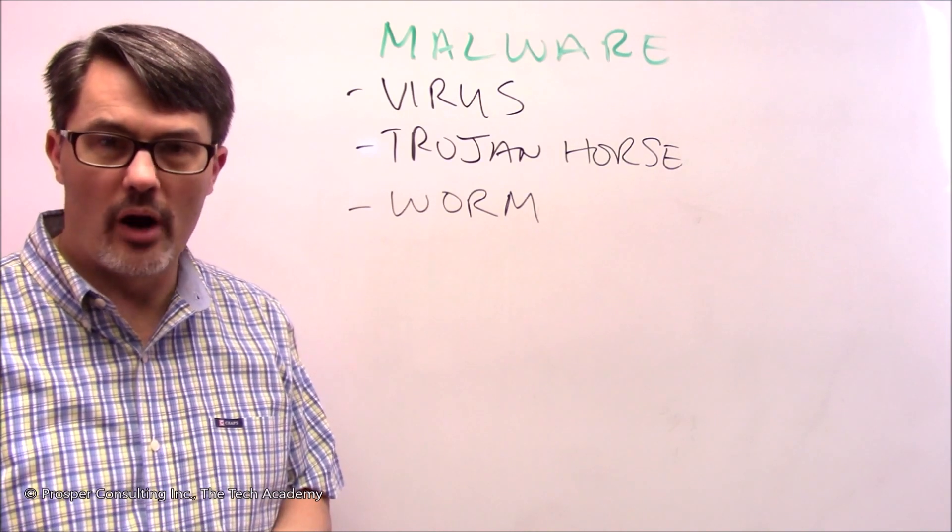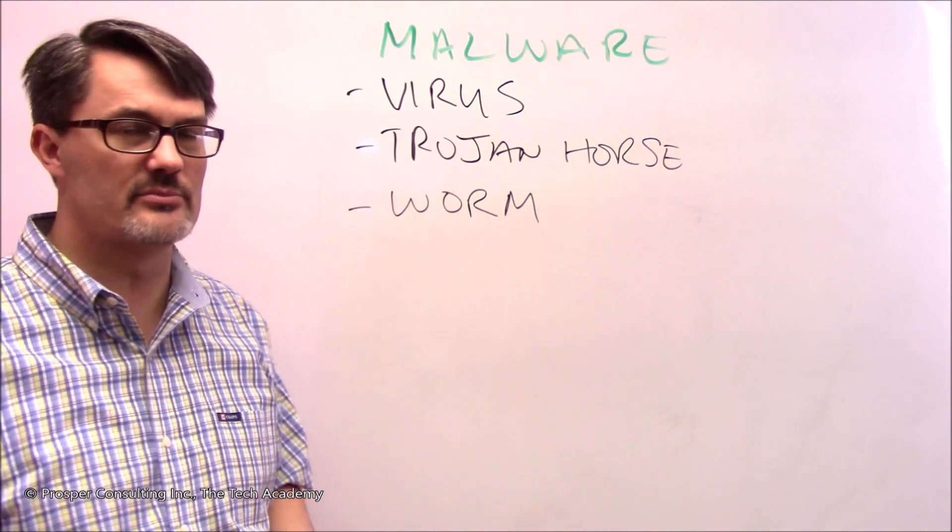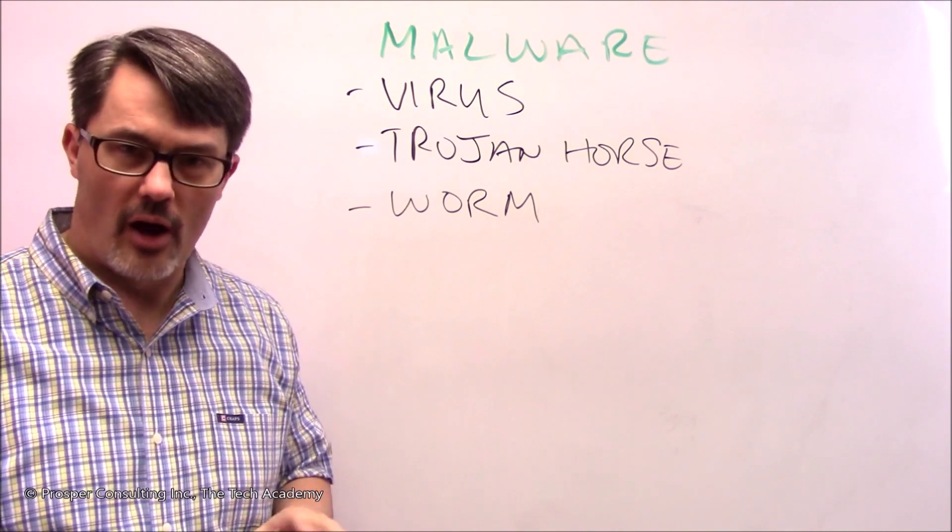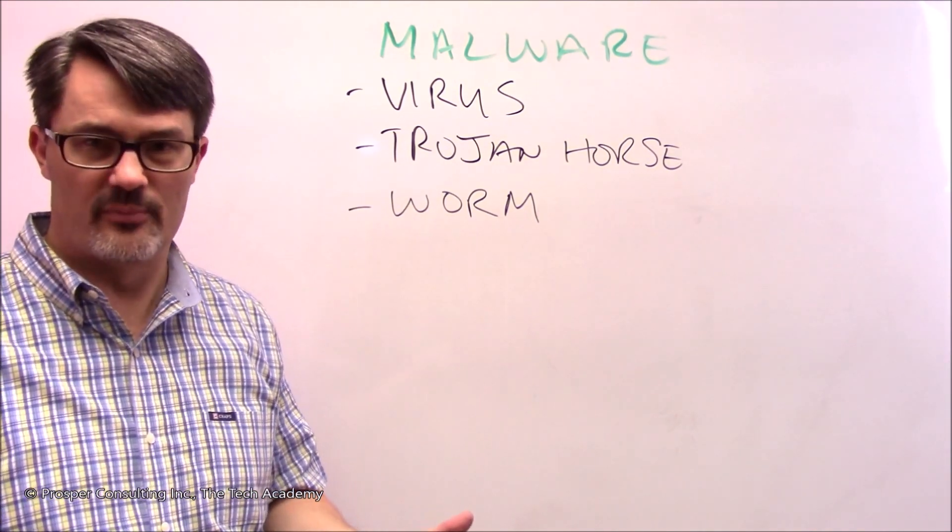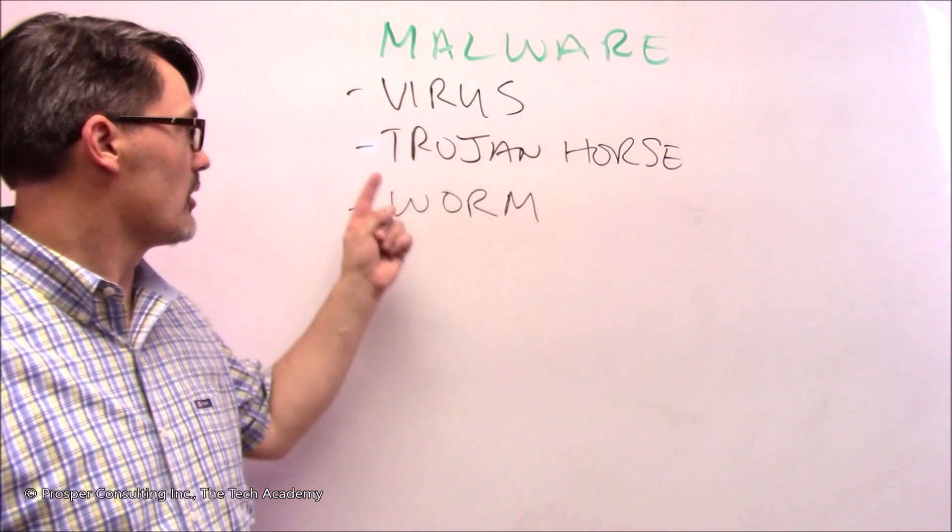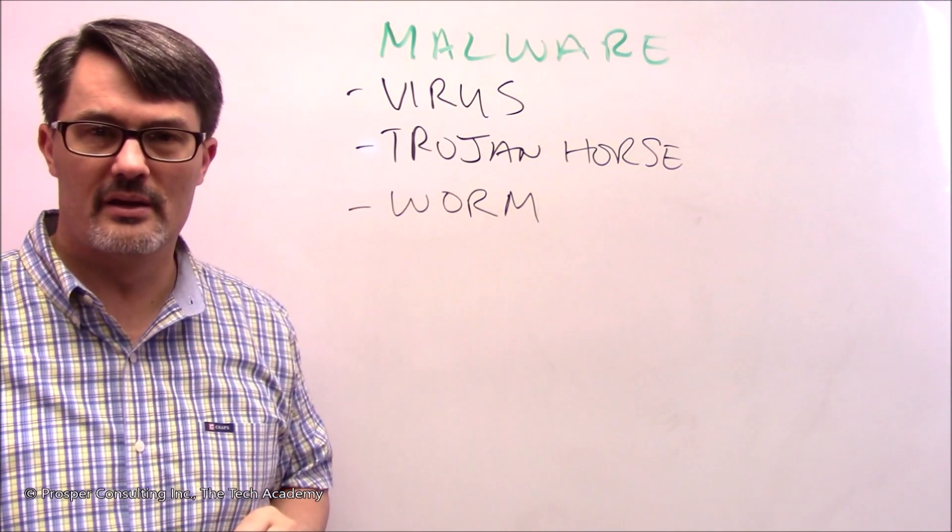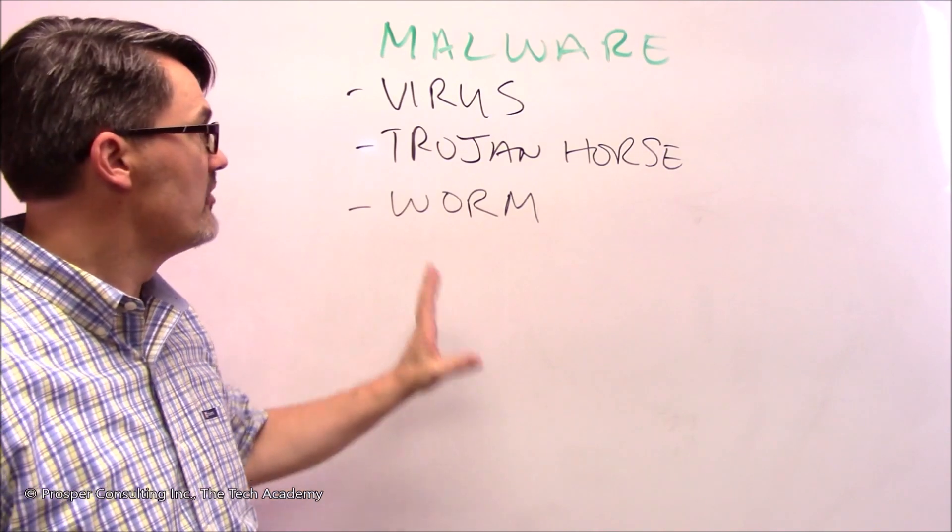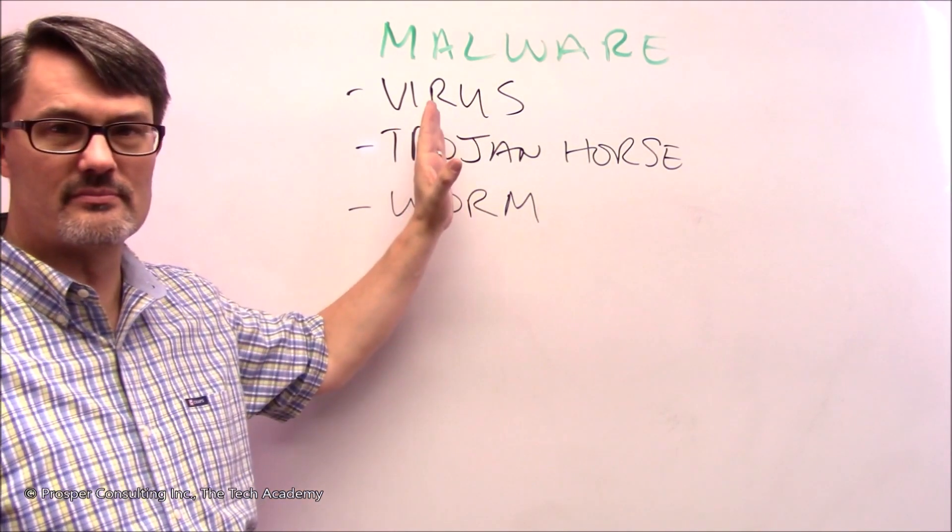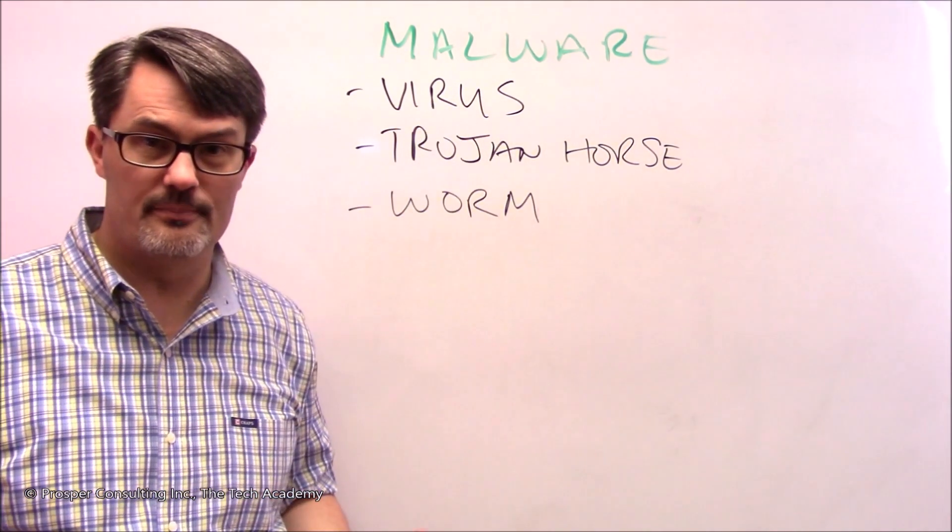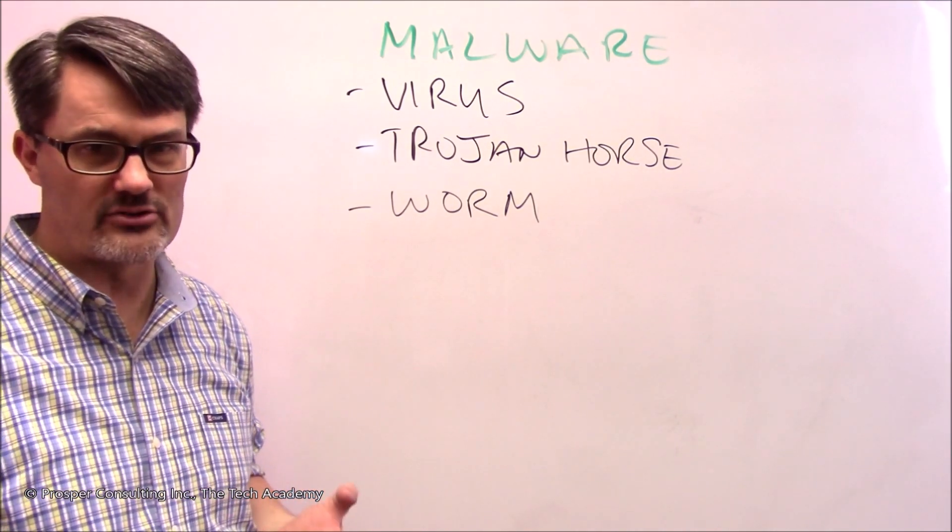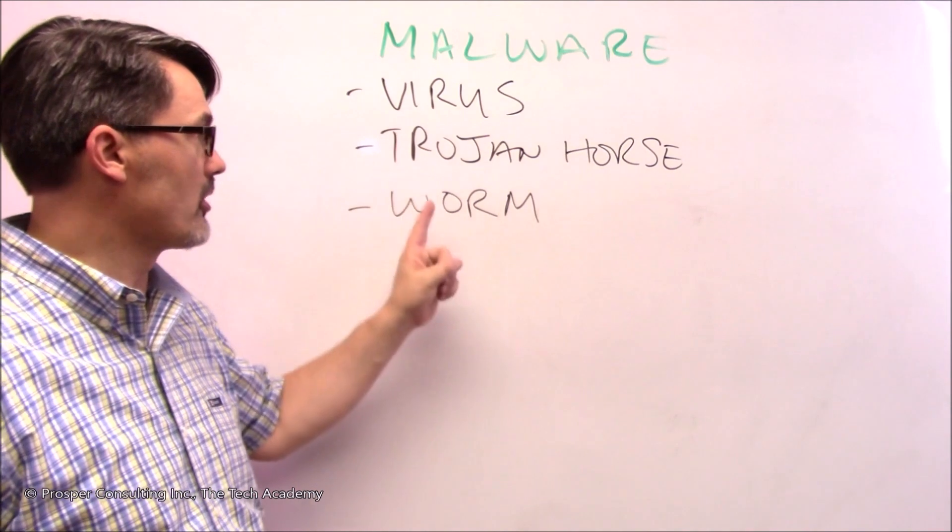One type you've probably heard about is the virus. There are other lesser-known terms you'll become familiar with as a software developer, like the Trojan horse and worm. These are actually different things, yet at the end of the day they're all computer programs just like you're going to develop. But it's the intent behind the computer program that matters here - these are designed to do something that's not very nice.